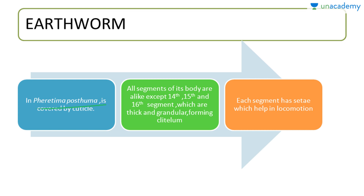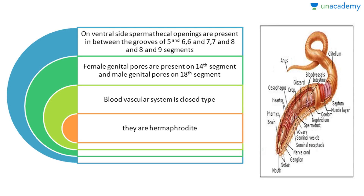The scientific name of earthworm is Pheretima posthuma and it is covered by a cuticle. All segments of its body are alike except the 14th, 15th and 16th segments, which are thick and granular and form a structure called the clitellum. Each segment has setae which help in locomotion. On the ventral side, spermathecal openings are present between segments 5-6, 6-7, 7-8 and 8-9. Female genital pores are present on the 14th segment and male genital pores on the 18th segment. The blood vascular system is of the closed type and earthworms are hermaphrodite in nature.